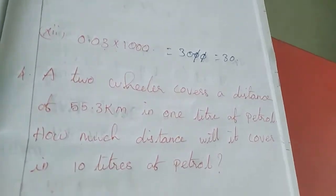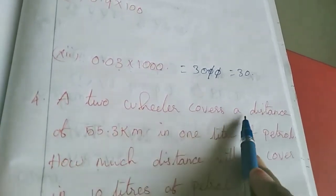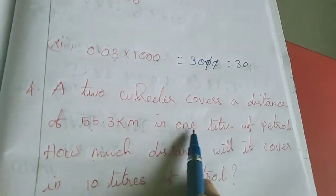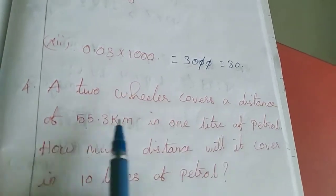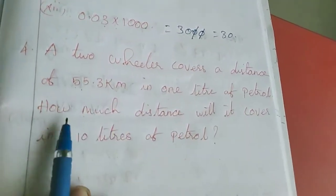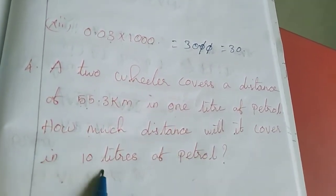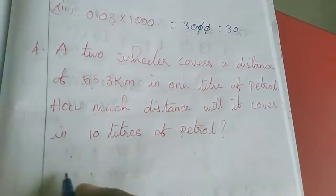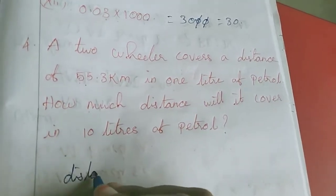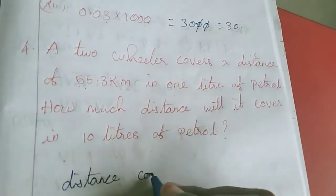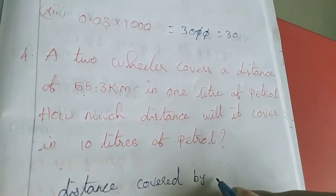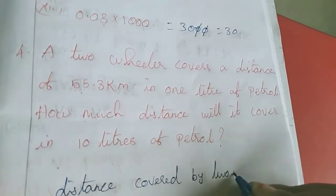Now I am going to do the 4th sum. A 2 wheeler covers a distance of 55.3 km in 1 liter of petrol. How much distance will it cover in 10 liters of petrol? So distance covered by 2 wheeler.